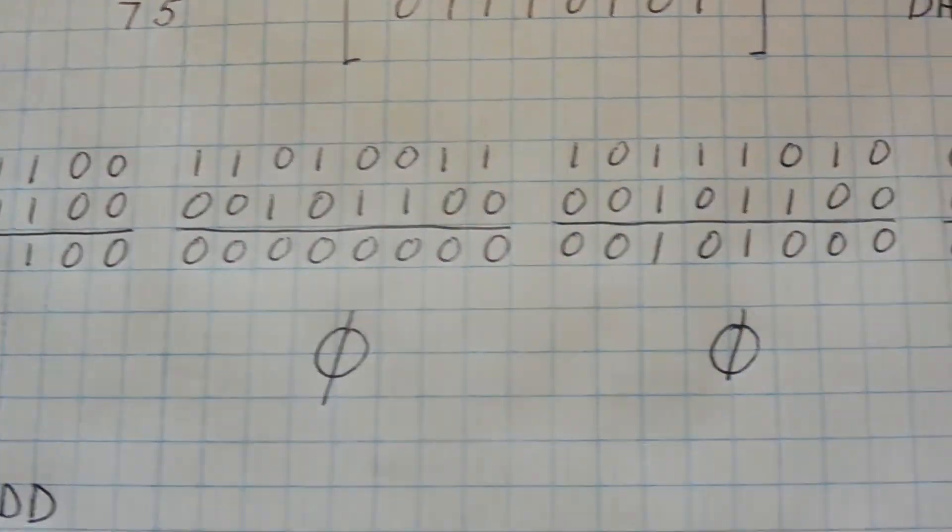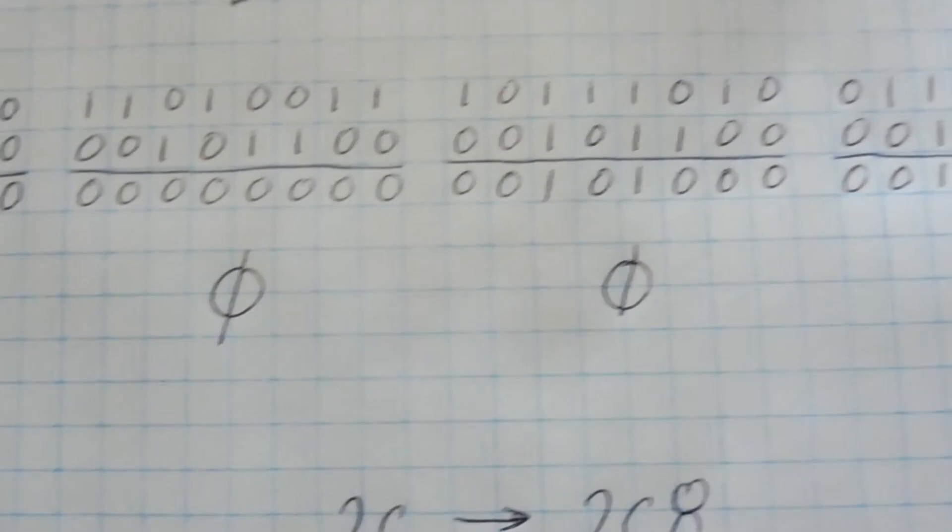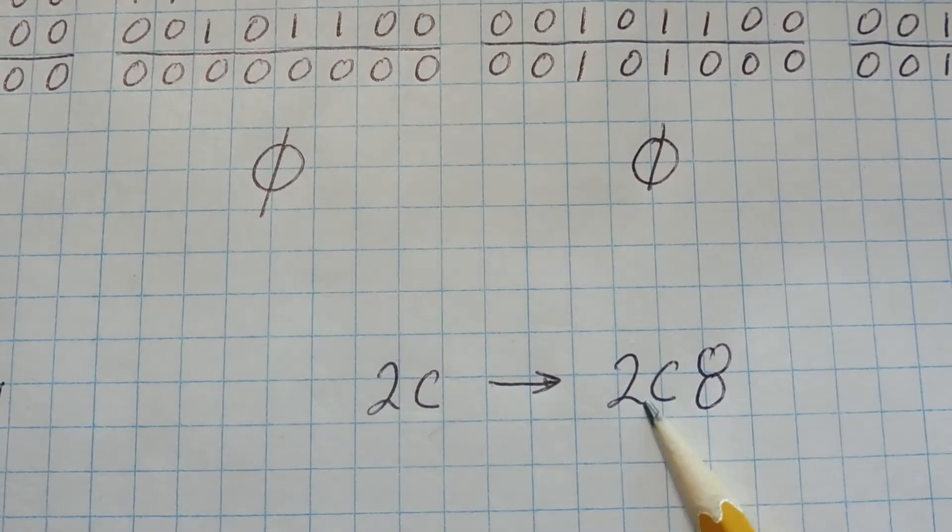So we have one, zero, zero, zero. And in hex, that works out to eight. So our data byte 2C will be encoded with 2C8.